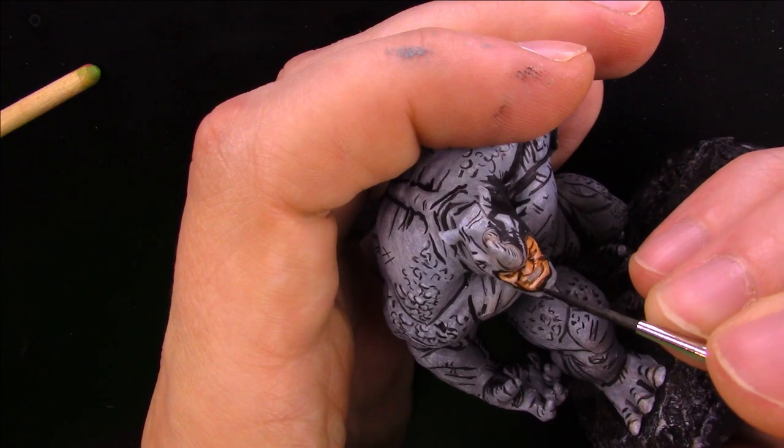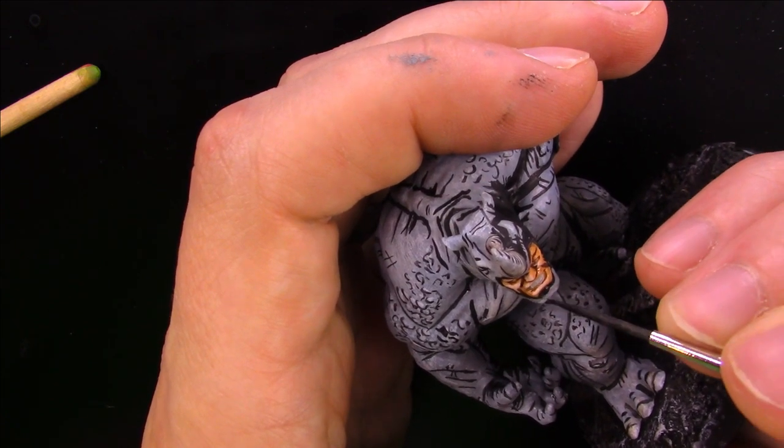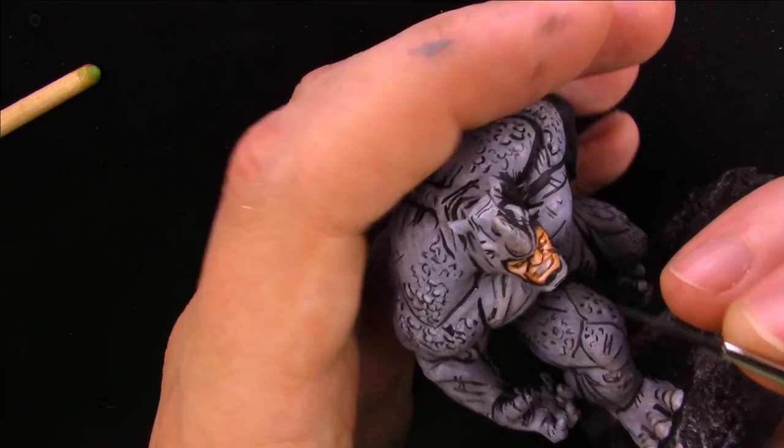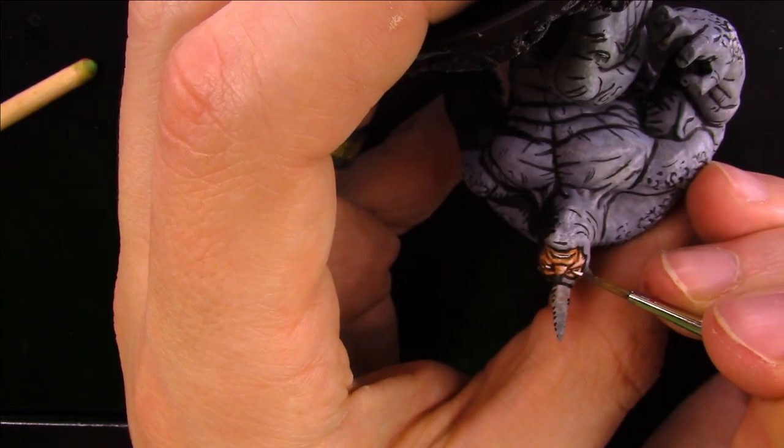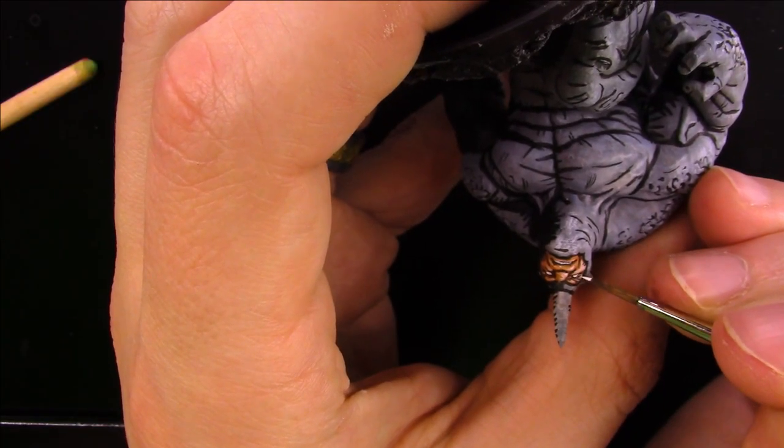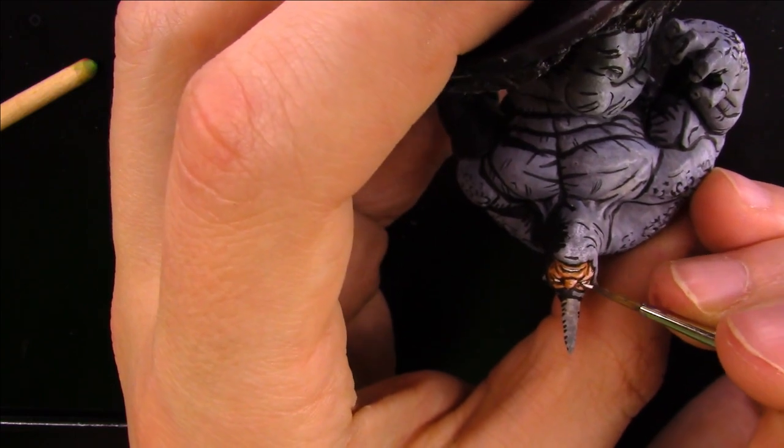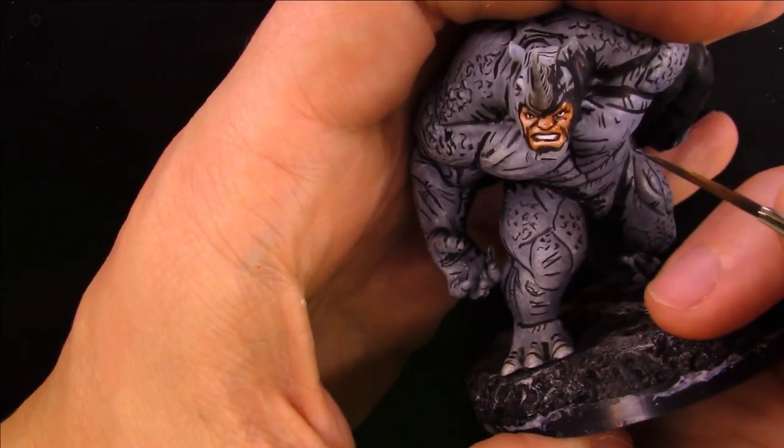Then I fairly carefully ink his face. I try to make very thin lines and not to clump them up too much. For the teeth I add a bit more white and small white dots for the eyes. For the pupils I take my black ink and make dots towards the top of the eyes. Again very simple.